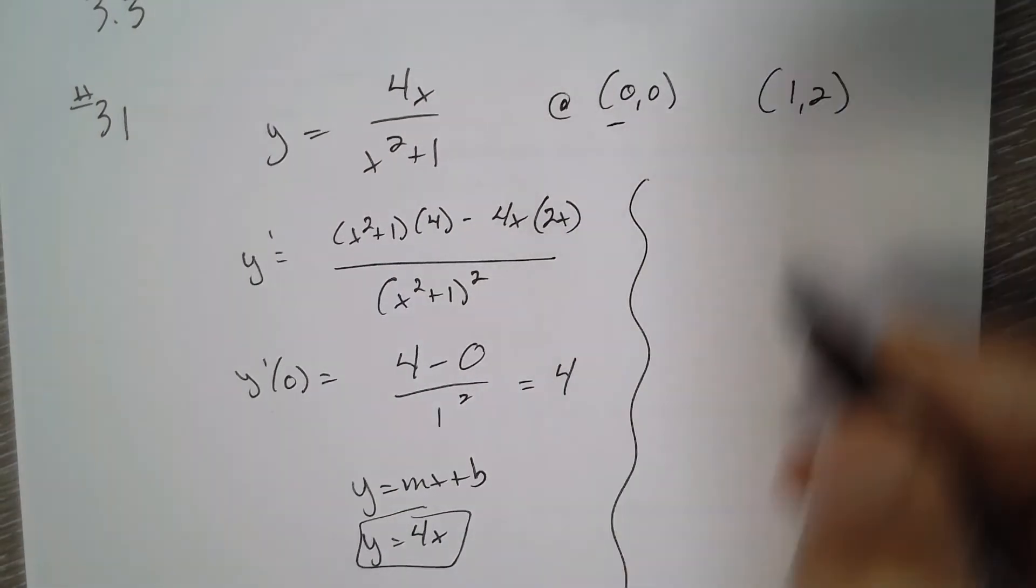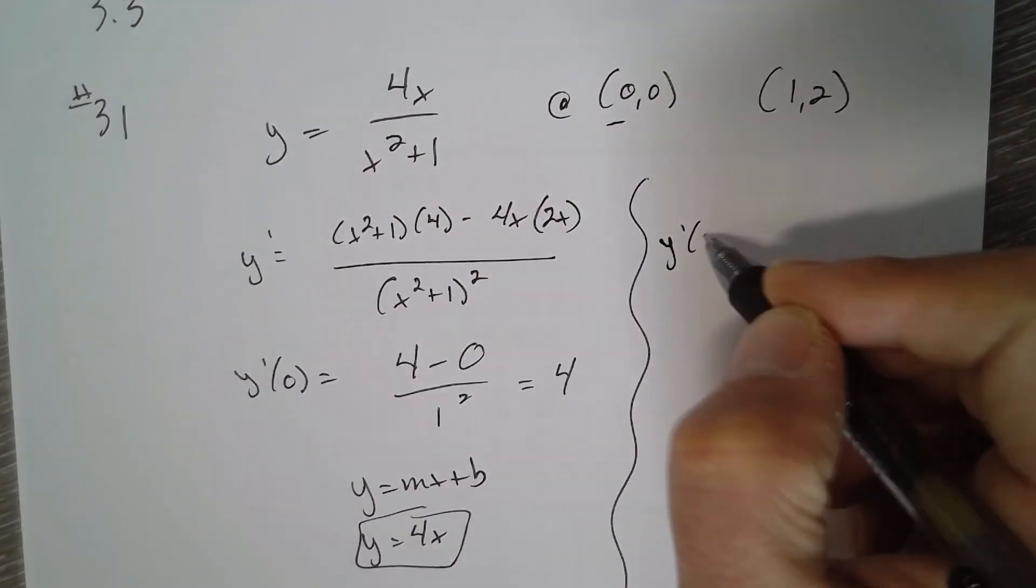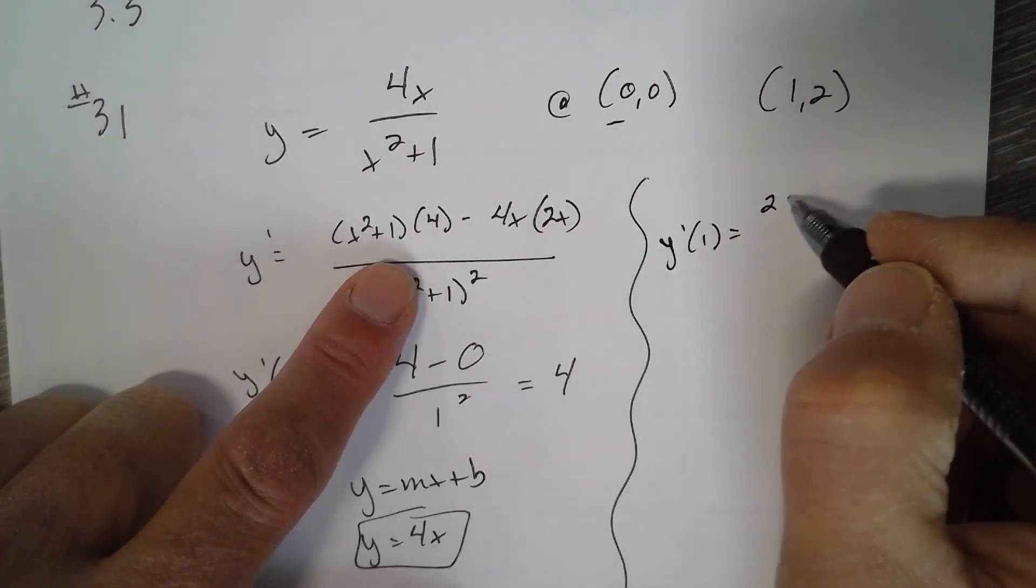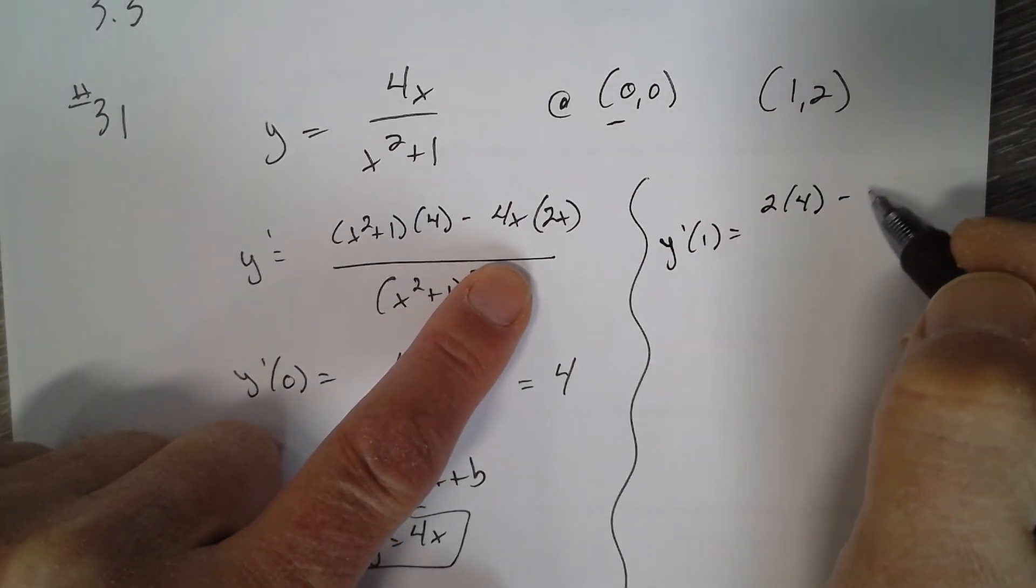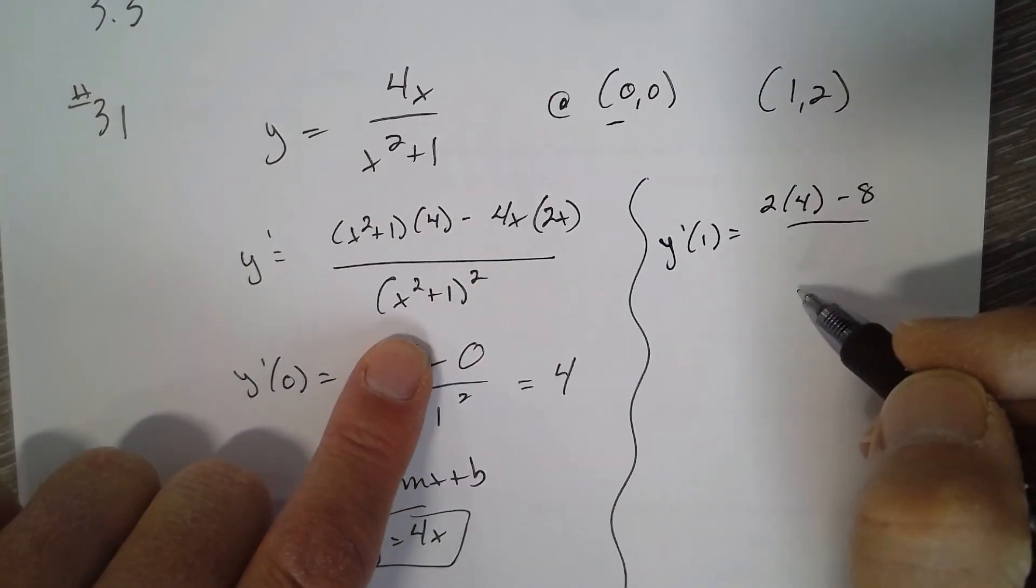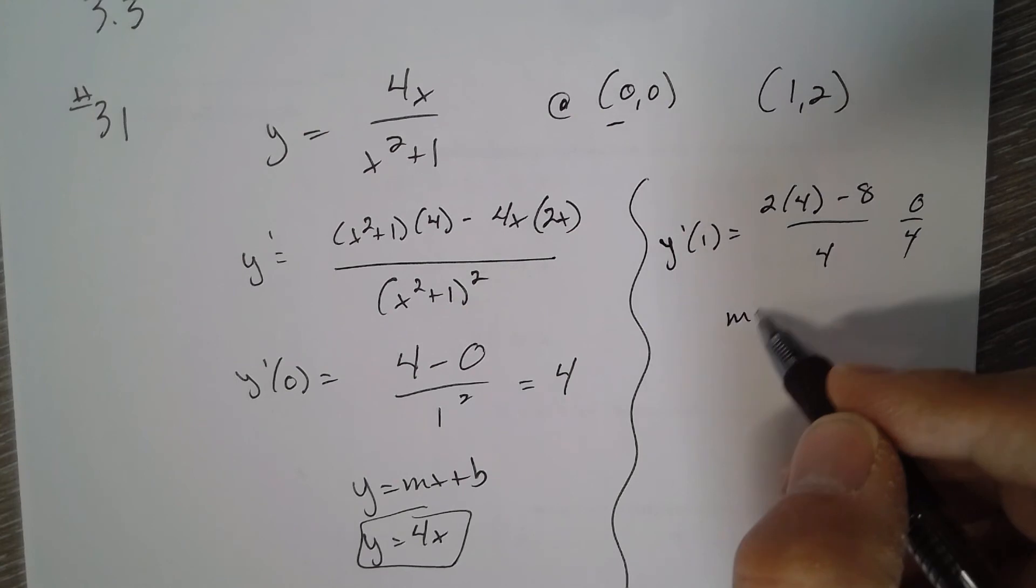I'll use the same derivative and I'm going to plug in one. Y prime of one gives you two times four minus eight, so I get zero over four. So zero over four gives me a horizontal line, so the slope is zero.